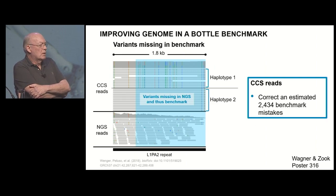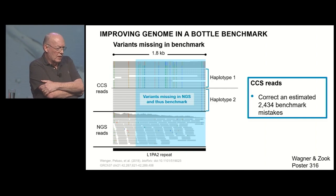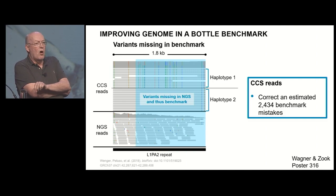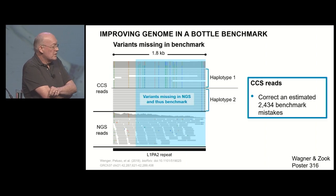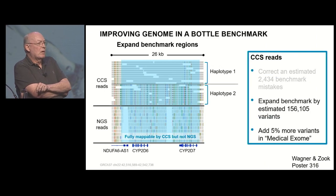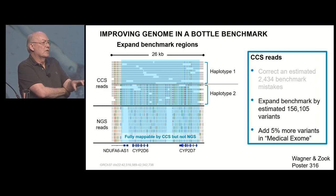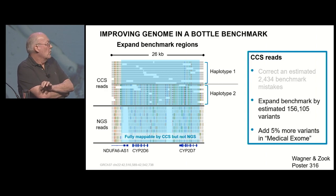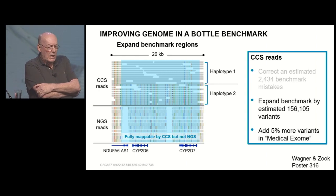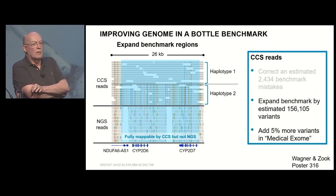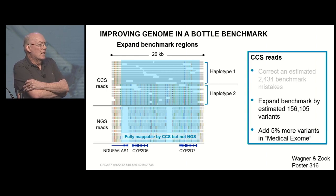What that means is that Justin Wagner and Justin Zook at NIST were actually able — and they presented this at a poster a few days ago — to go through the Genome in a Bottle high confidence call set and correct a reasonable number of what were thought to be high confidence mismatch calls in the reference. On top of that, because we can map much more carefully with longer insert reads relative to 200 or 300 base pair reads, we could identify high quality calls outside the region that short reads were able to work on. Their estimates are that they were able to add over 150,000 new high quality mismatch calls not previously in the reference — representing about a 5% increase in reliably callable variants in medically related and important genes.